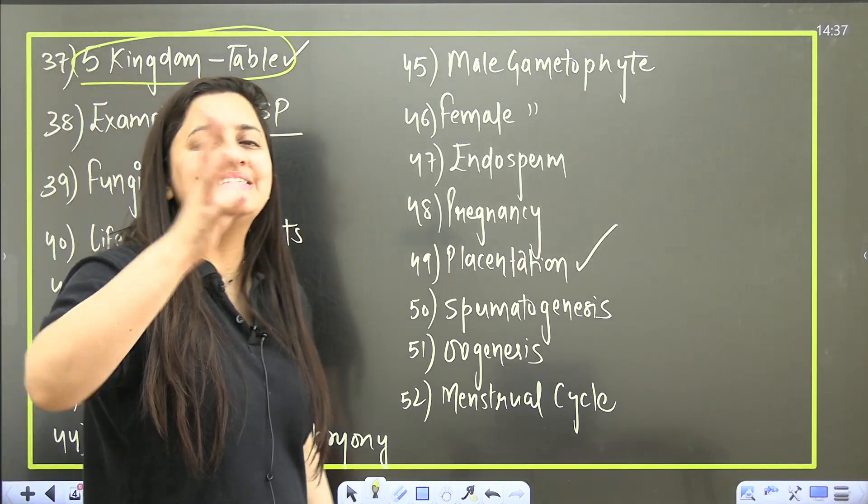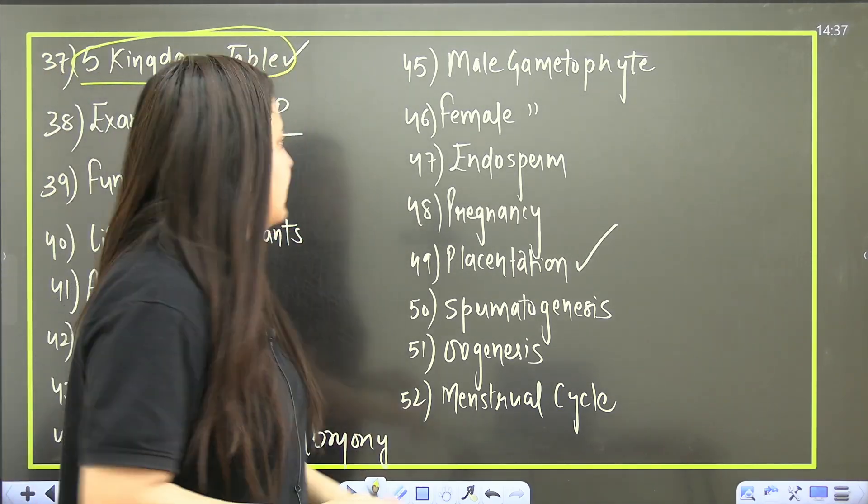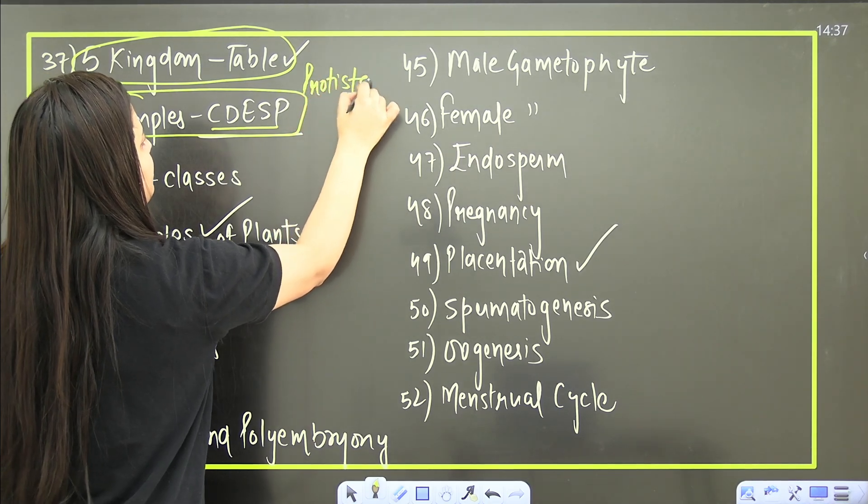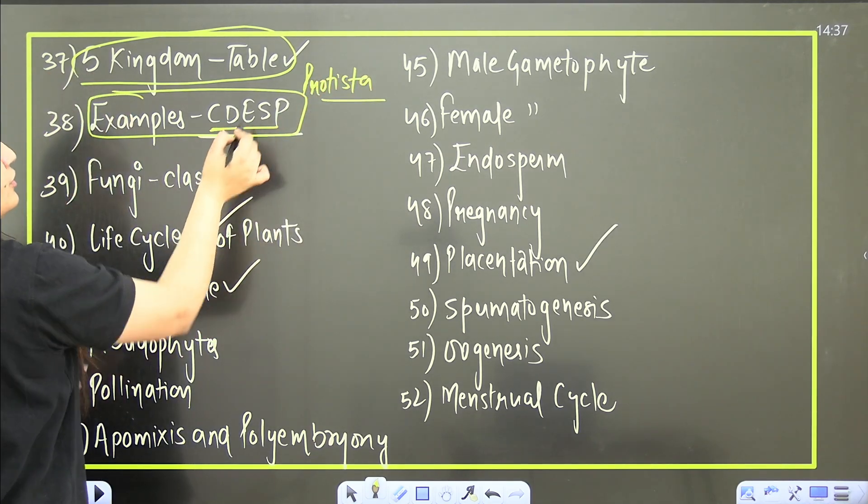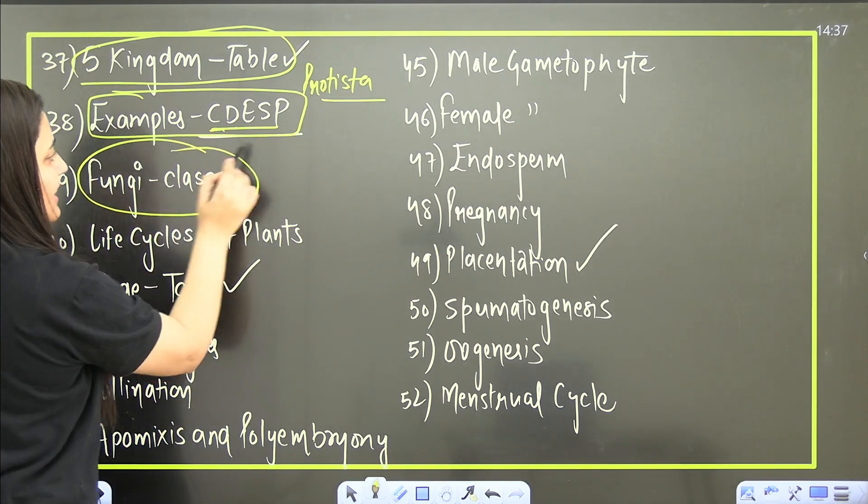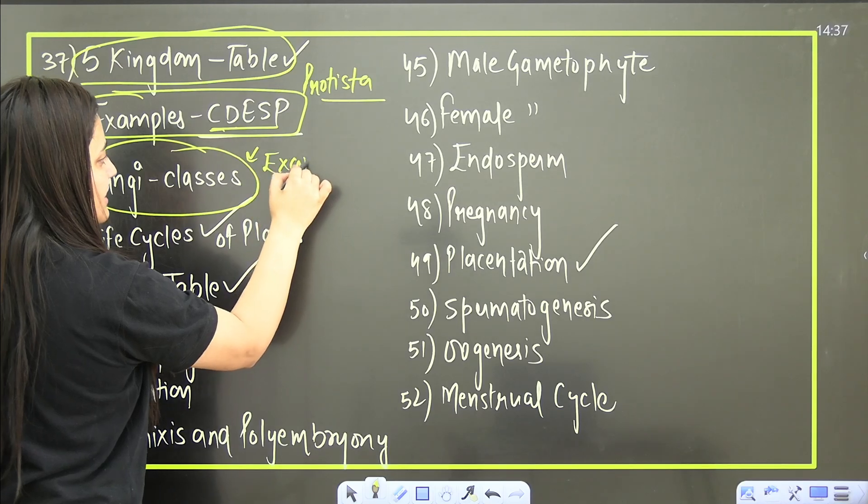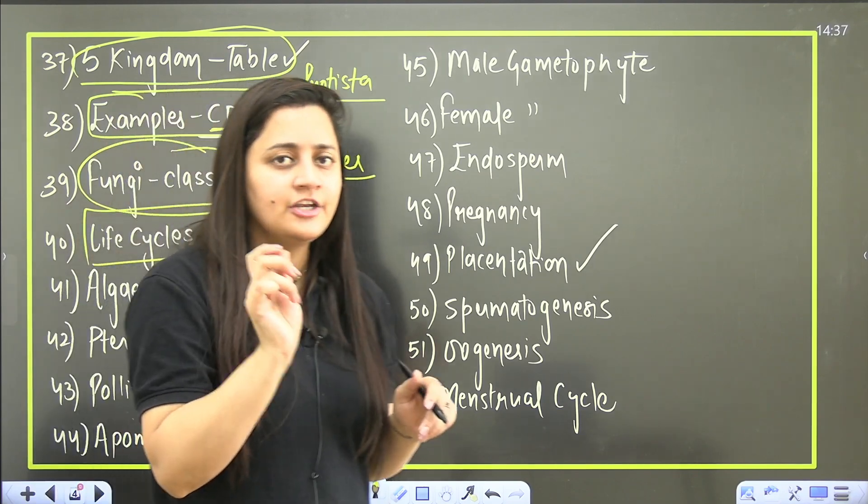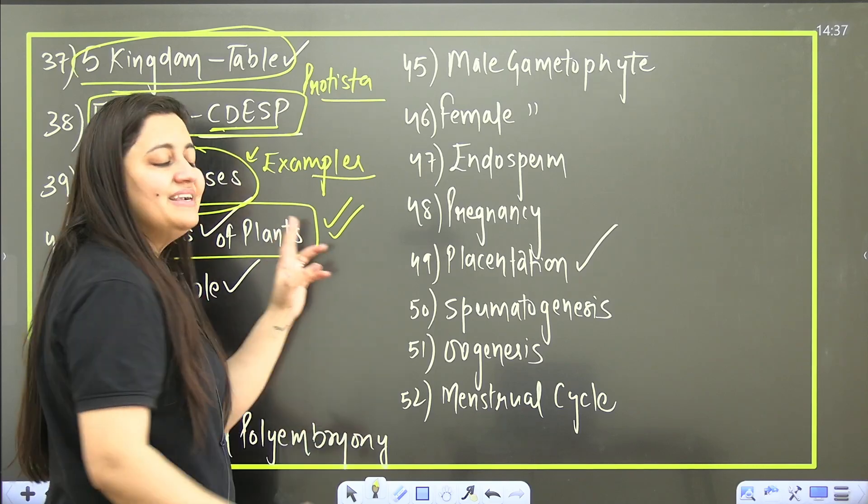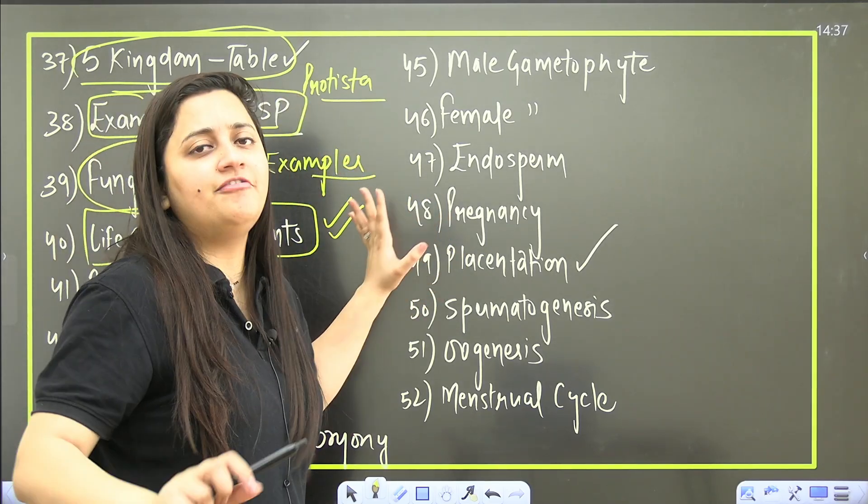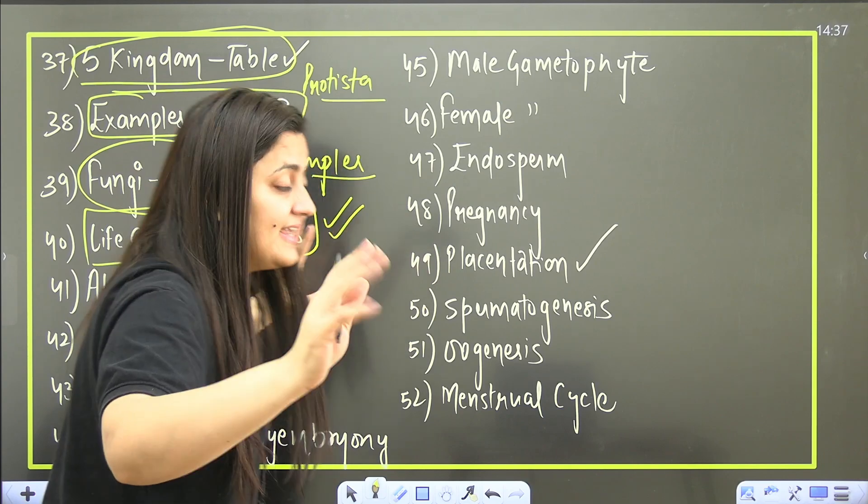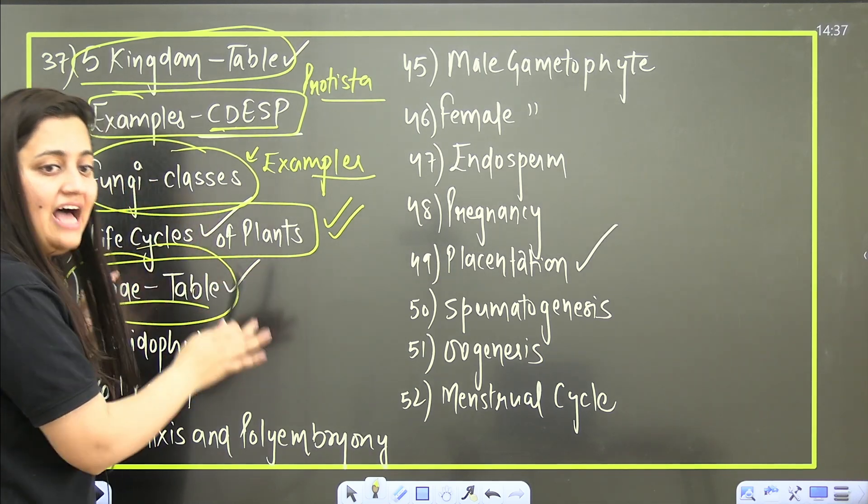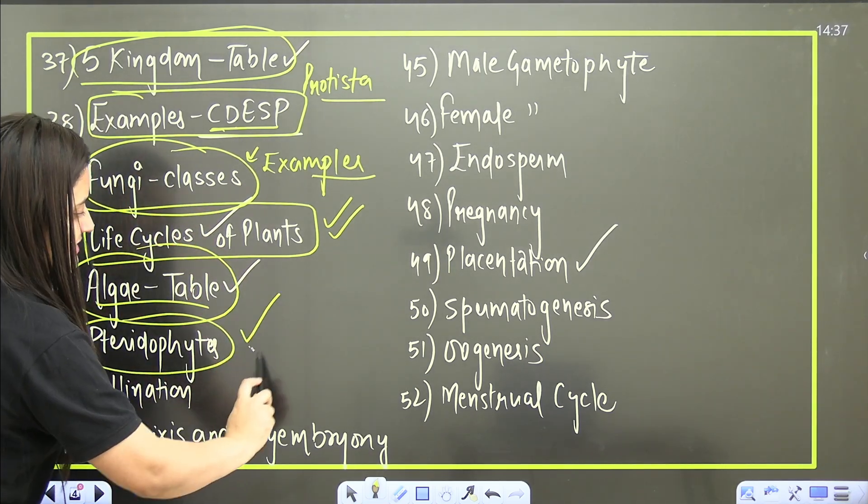Binomial nomenclature is there, and then five kingdom - that table, on what basis we are dividing them in different different kingdoms. Then examples from your Protista - this is CDESP, that is your Protista - chrysophytes, dinoflagellates, euglenoids, slime molds, protozoans. Fungi - their classes and their examples. Life cycle of plants - it is not specifically written in your new syllabus, but if you will cover the life cycles it will complete a majority of part from your algae, bryo, pterido, gymnosperms.